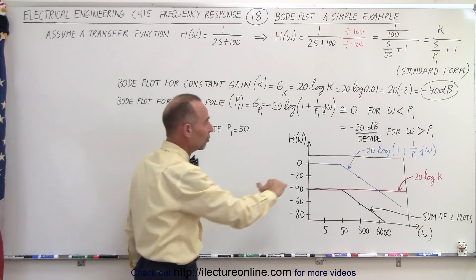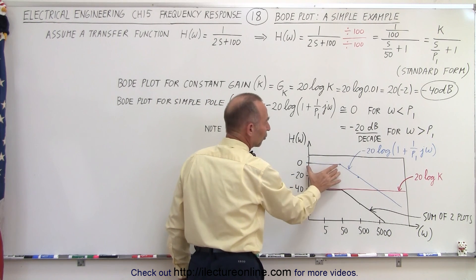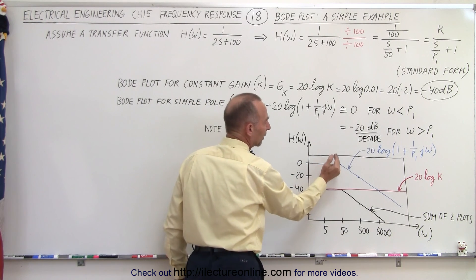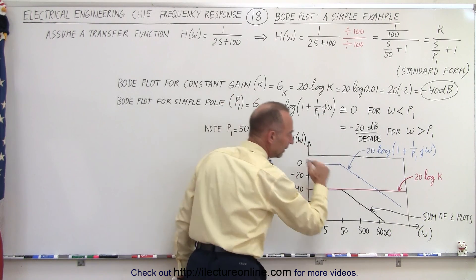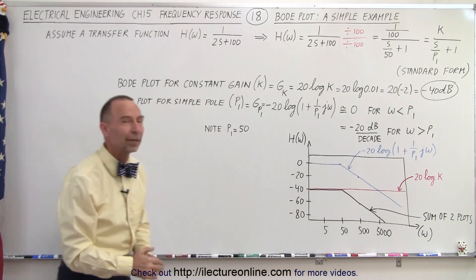That's where the slope begins prior to omega being equal to 50. Then you have zero slope. We just simply call it zero and so there's really no effect to the Bode plot until omega hits that value equal to the simple pole and then the minus 20 dB slope begins.